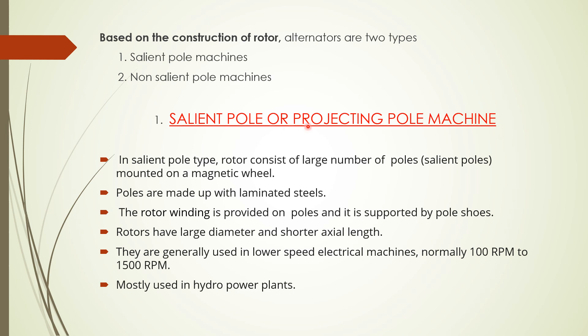The first type is salient pole machines, also known as projecting pole type machines. In salient pole machines the rotor consists of a large number of poles compared with non-salient pole machines, and they are mounted on a magnetic wheel structure which forms the rotor. The poles are made up of laminated steel in order to reduce eddy current losses, and the rotor winding is provided on the poles, supported by the pole shoes.